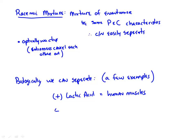The minus version of lactic acid is produced by bacteria and is used to sour milk.